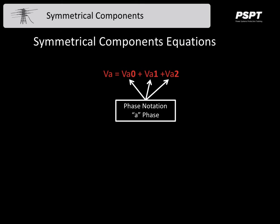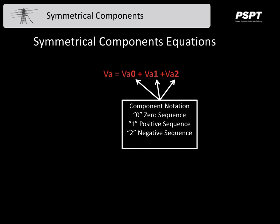You'll see that the phase notation is written in subscript. The first subscript, in this case A, denotes the phase of the quantity, whether it's a symmetrical component or not. The second term in subscript, sometimes I use a superscript, but the second term is usually the notation for the sequential component.